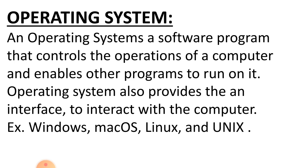There are different types of operating systems: DOS (Disk Operating System), Unix, Linux, Windows, and Mac OS — all are examples of operating systems for computers. And if we look for mobile, Android and iOS are the examples.